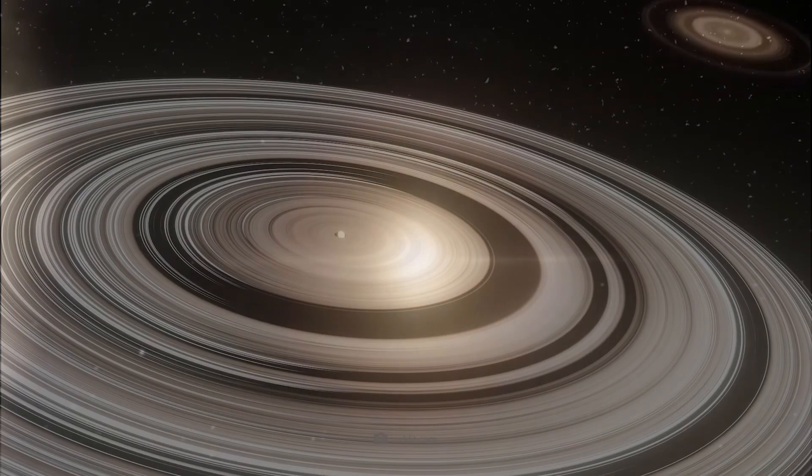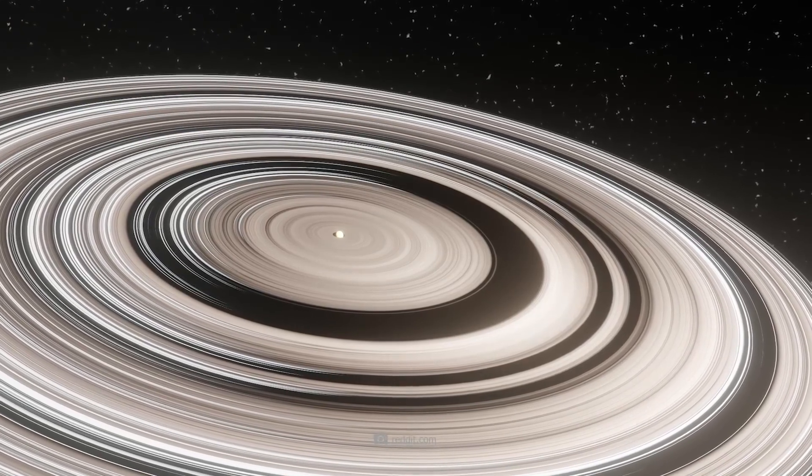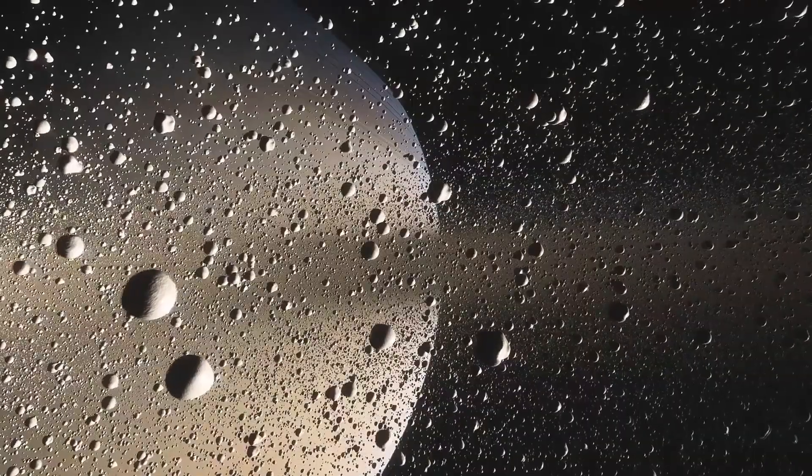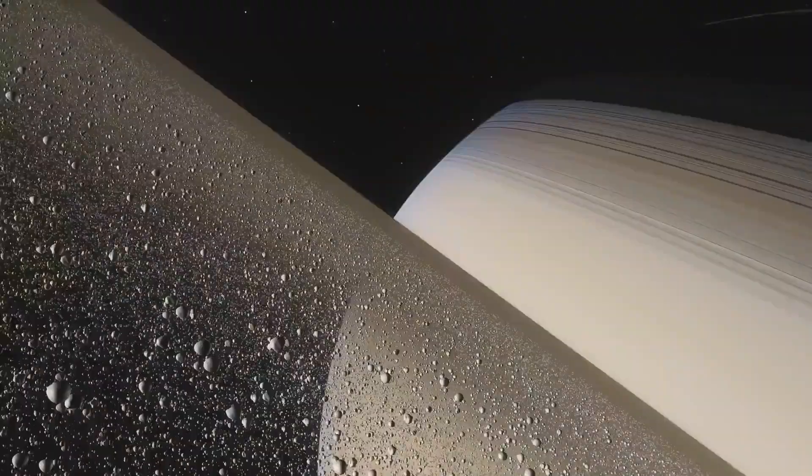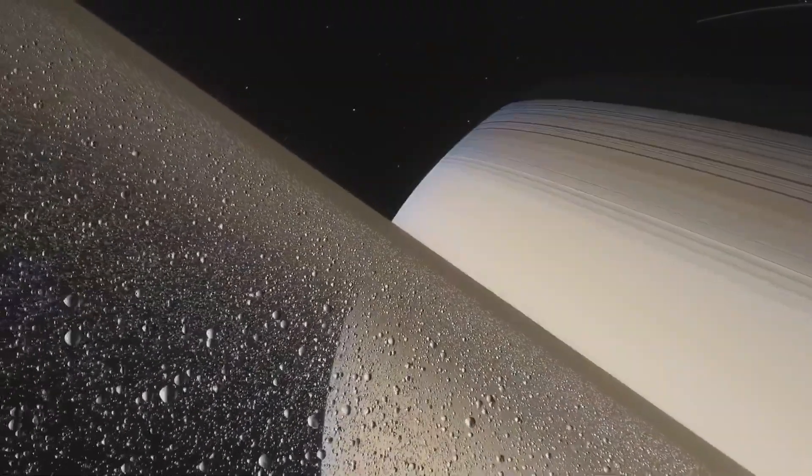Additionally, the massive ring system of Super Saturn may also be an obstacle for any potential life forms, as the rings could block sunlight and create unstable gravitational conditions.